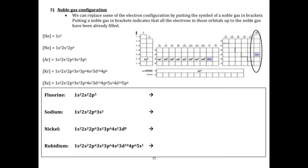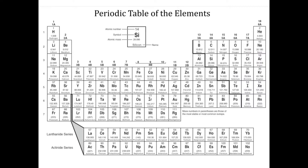So let's go ahead and talk about what noble gas configuration is. The first thing we want to do is define what the noble gases are. We're on page 15 in your booklet. Noble gases are this last column on the periodic table — so these right here are the noble gases.